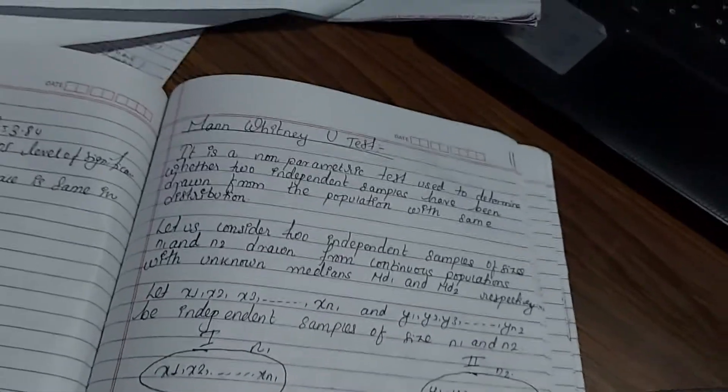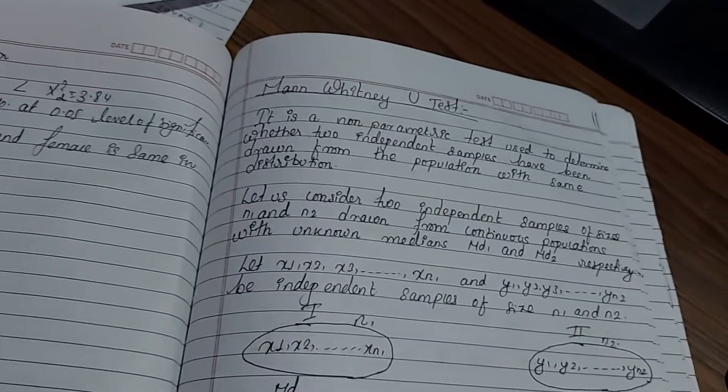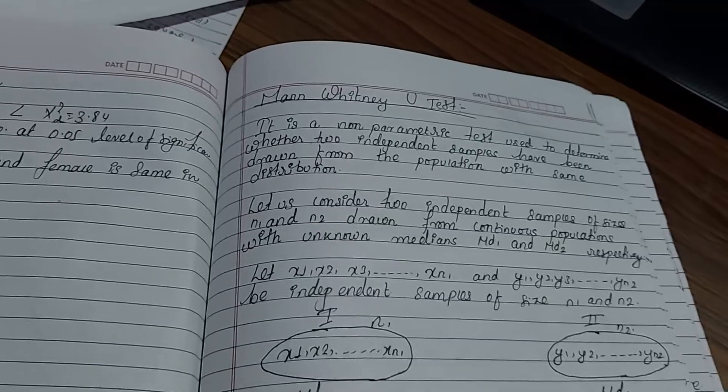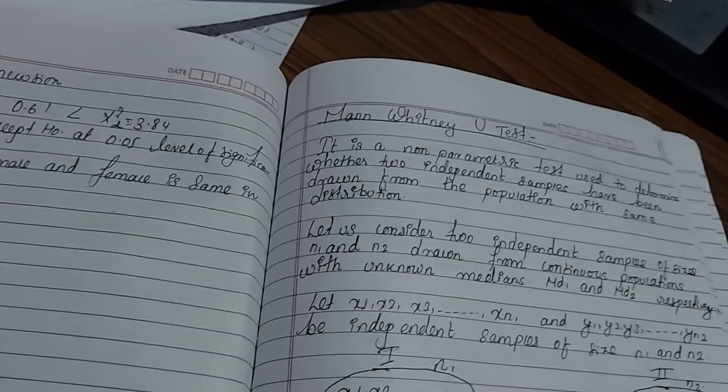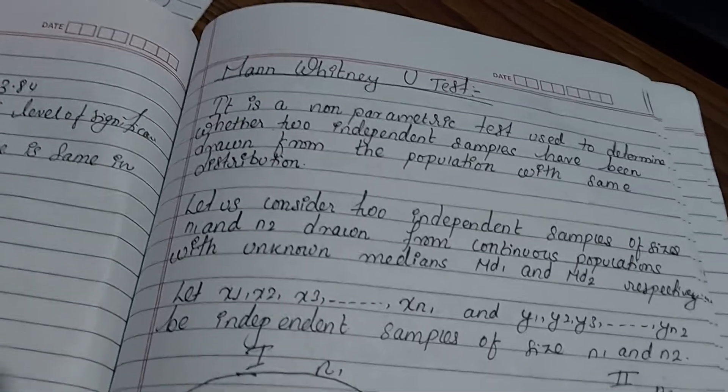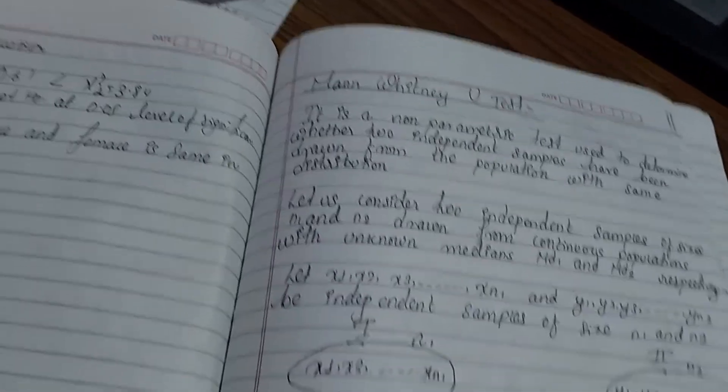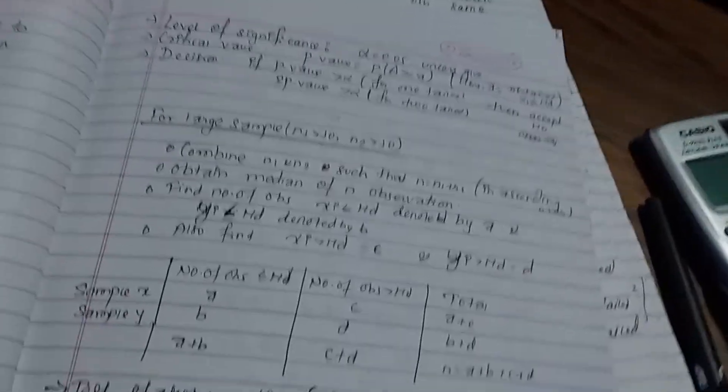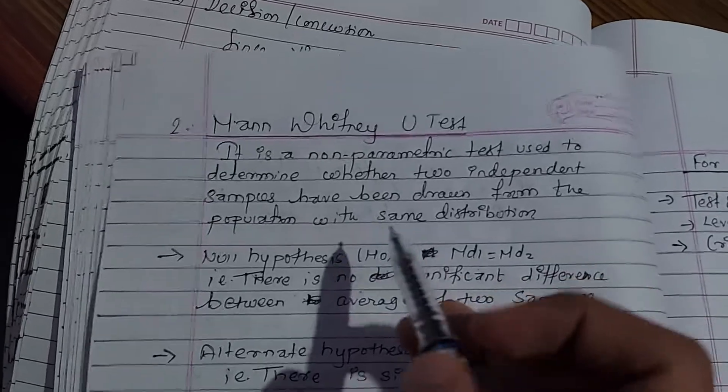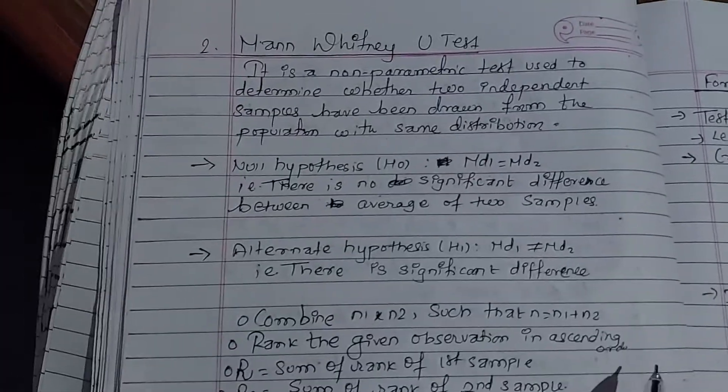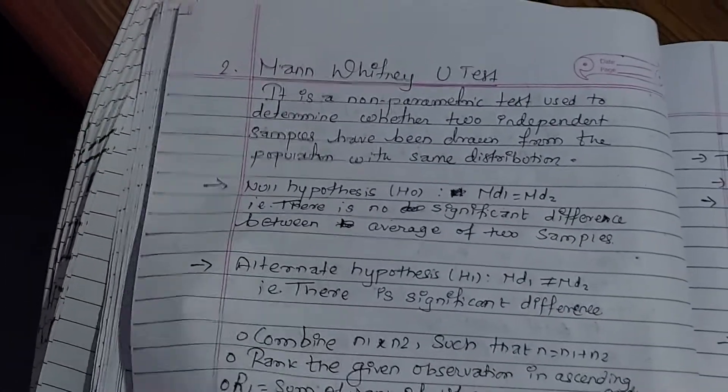Hello guys, welcome to a statistics lecture. Today we're covering the Mann-Whitney U test. It is a non-parametric test used to determine whether two independent samples have been drawn from the population with the same distribution. This is the normal definition of the Mann-Whitney U test.